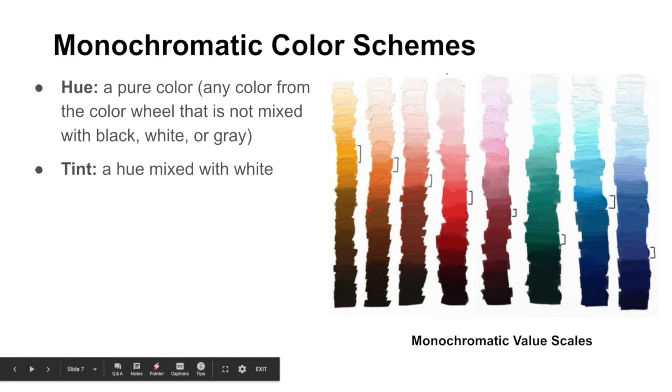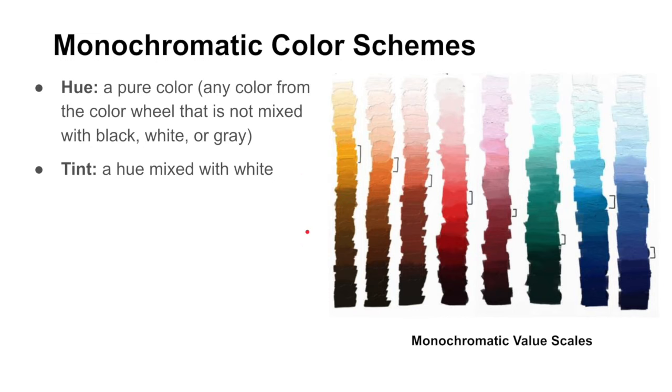A tint is a hue mixed with white. So a lot of times people think when you hear the word tint, you think like tinted windows, and that's dark. But in art, when we talk about tints, we talk about colors that are lighter. So a hue mixed with white tends to get a lot lighter. Conversely, a shade is a hue mixed with black. So obviously our color is going to get darker when we add black to it.